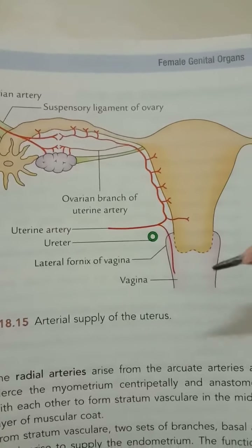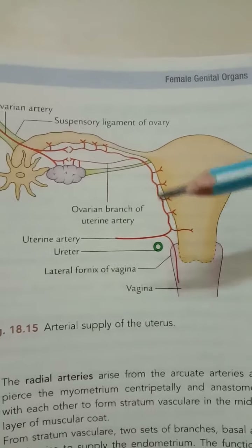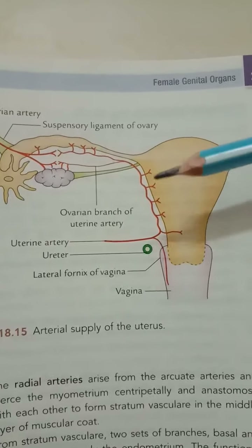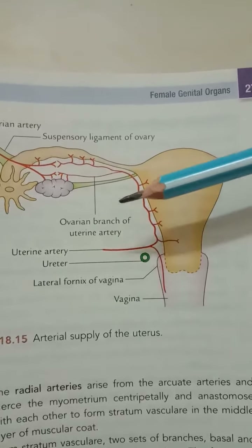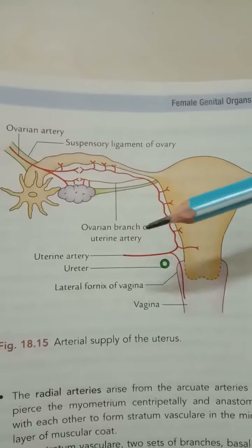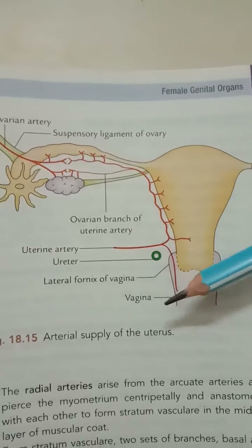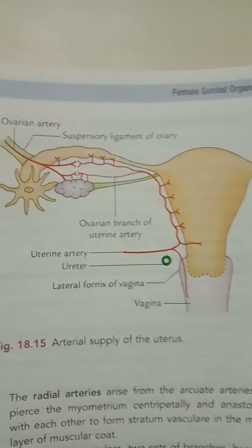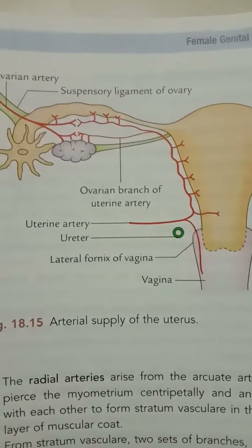The veins of the uterus correspond to the arteries and form venous plexuses along the lateral border of the uterus, which drain into the internal iliac veins through the uterine and vaginal veins.